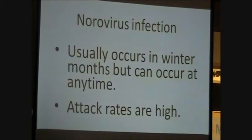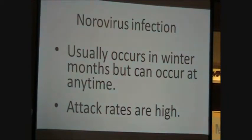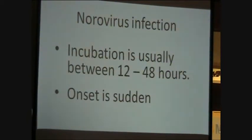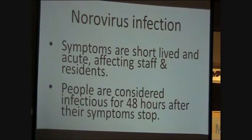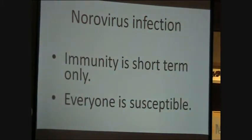Norovirus usually occurs in the winter months, most commonly between October and April, but can occur at any time of the year. The attack rates are high, about 50%, so about 50% of residents and staff may get the infection. Incubation — the time between picking up the virus and starting to become ill — is usually between 12 and 48 hours. The onset of symptoms is sudden. Symptoms are short-lived and acute, affecting staff and residents. People may be infectious for 48 hours after they stopped vomiting and for 48 hours after their stools return to normal. Immunity is short term, so people can get norovirus several times, and everyone can get the infection.